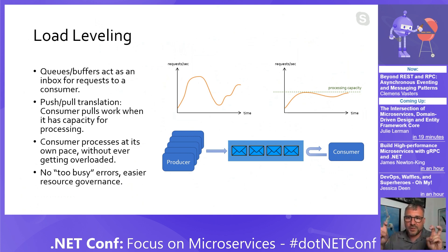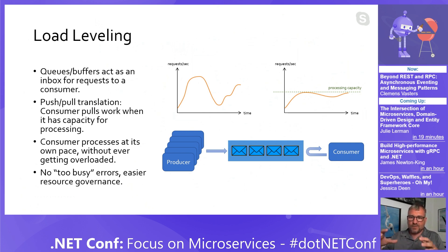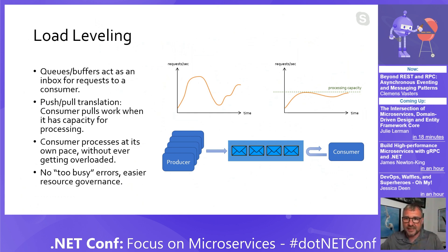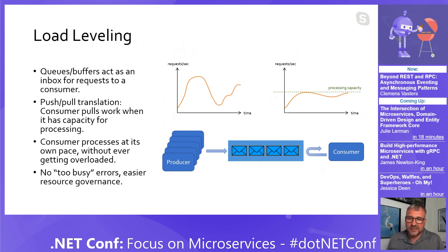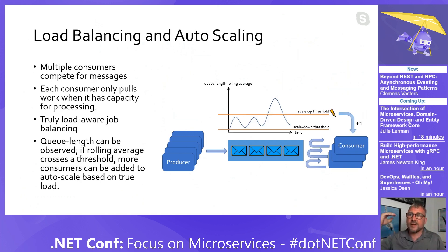We all know about the 'too busy' errors that systems happily throw. In microservices, if 5 or 10 microservices make up a system and one call leads to another, those too-busy errors propagate back and it's really difficult to recover. Through decoupling, you effectively don't have those too-busy errors — you're processing at the pace of the consumer. Obviously that means work might be slower in execution, but you can use information the queue gives you — like queue length — to scale up resources whenever necessary.